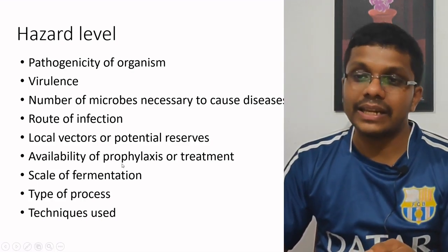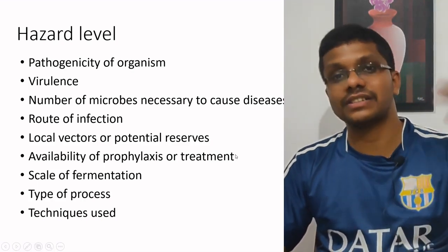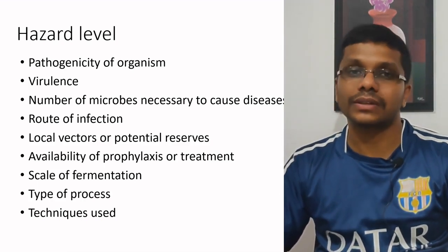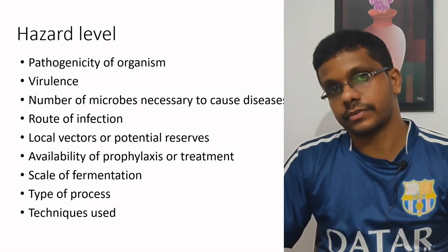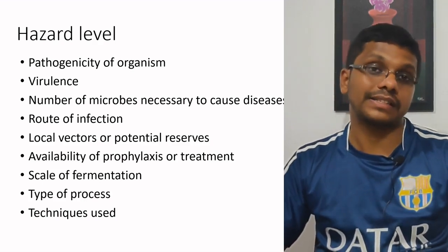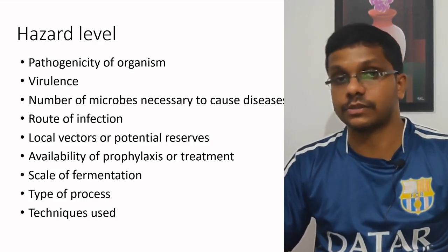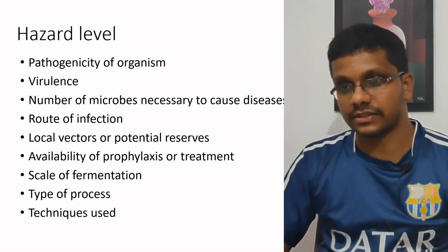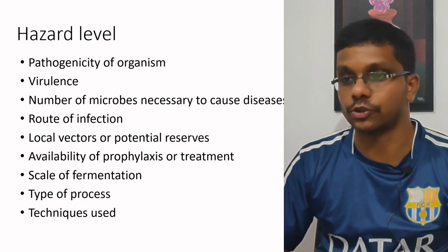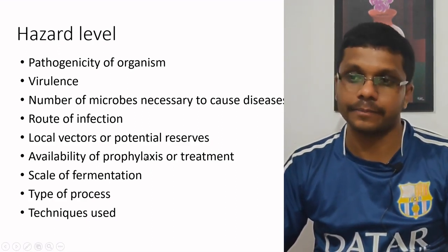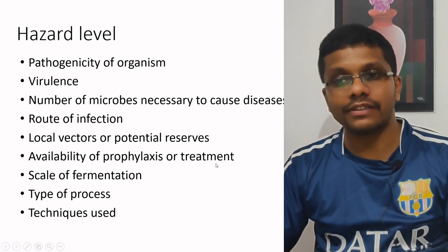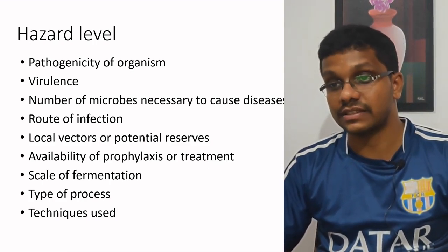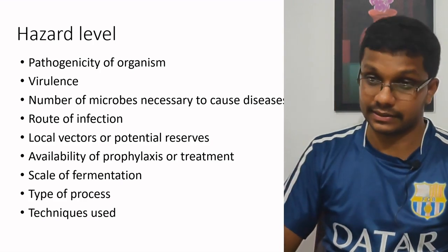Sixth, availability of prophylaxis or treatment — if a vaccine already exists for the organism, it is not as hazardous. In industry, if you are growing a pathogenic microorganism, you can give the vaccine to all employees and maybe their family members, thereby reducing the hazard. If no treatment exists for the disease, that organism is considered highly hazardous.